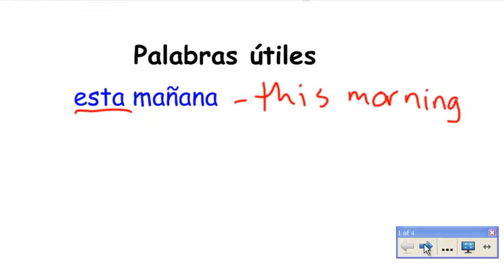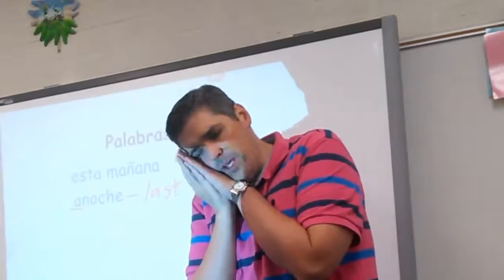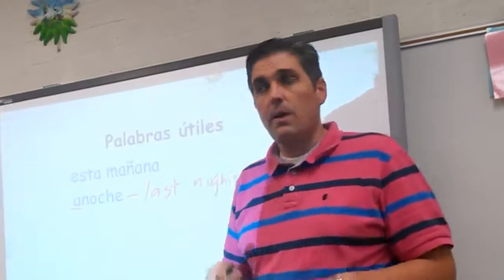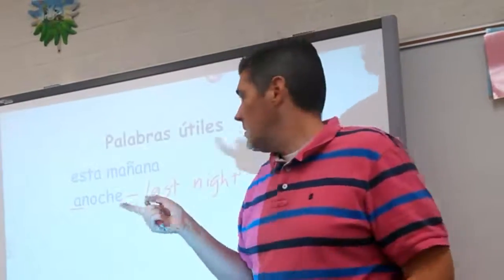Another one we are going to be using a lot: anoche. A lot of people when they first learn this word, they know that A means 'to,' like voy a la biblioteca — I go to the library. But anoche does not mean tonight — that would be esta noche. Anoche means last night. Anoche yo dormí siete horas. Anoche yo comí espaguetis.